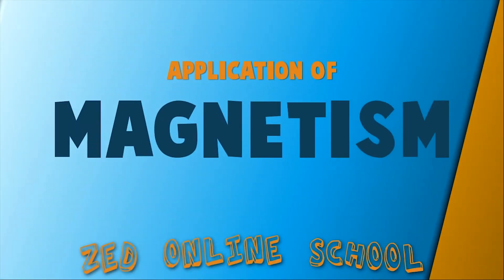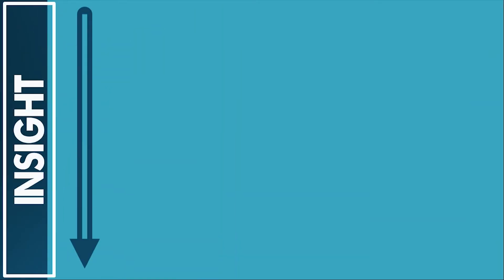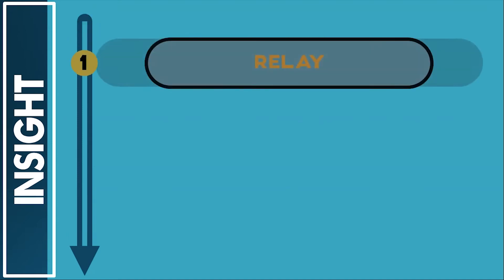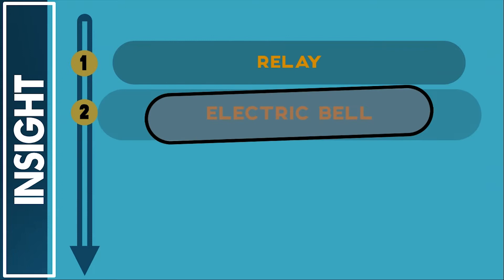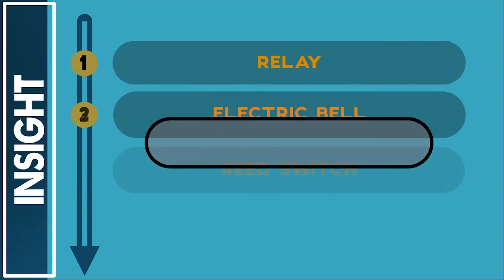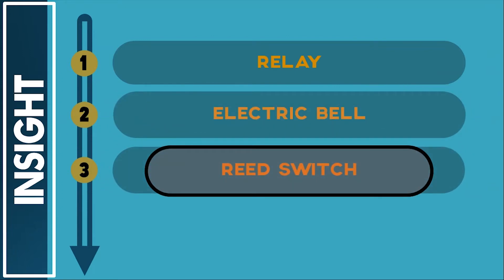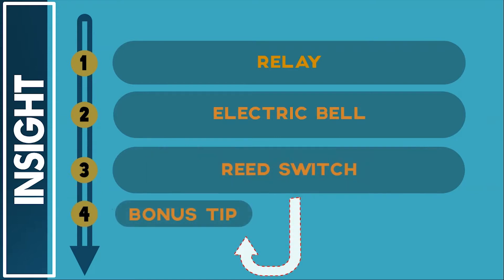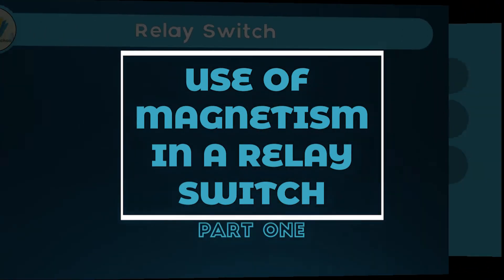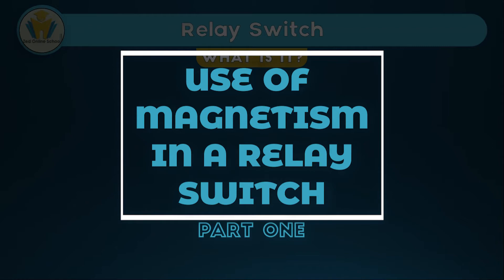In this video we'll be looking at the application of magnetism in a systematic way. By the end of this video you're going to know how magnetism is used in a relay switch, an electric bell, and a reed switch. At the end of this video we've got some bonus tips for you, so stay till the end to get the maximum value. We are going to start with the relay switch.